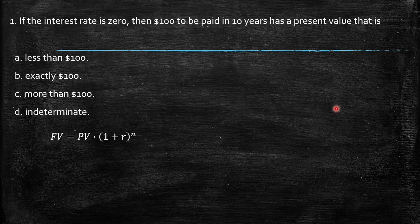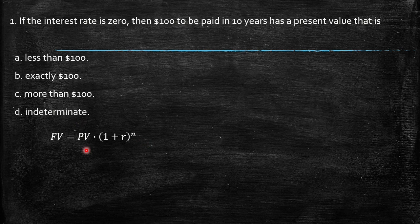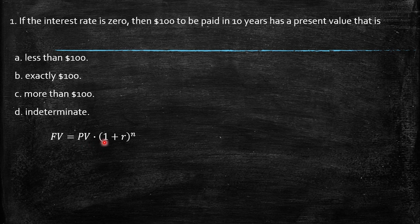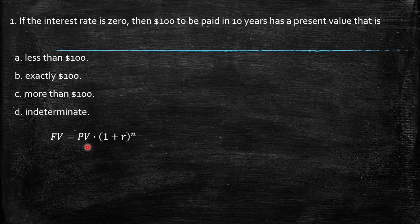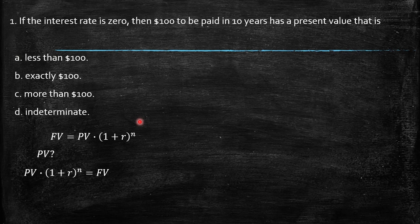First, we need to know the equation we developed during this chapter. The final value is exactly equal to the present value times (1 + r)^n, where r is the interest rate and n is the periods. Here we need to solve for the present value, so we need to find that variable.